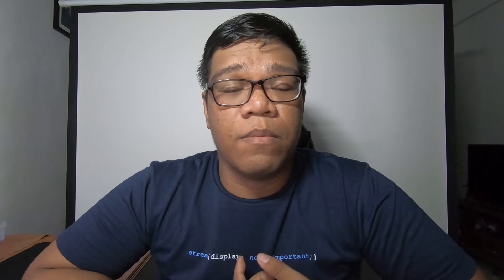Before we start, we need some materials to do our project. First, we need the Arduino Uno, jumper wires, breadboard, and of course the LED. The next thing we need to do is to create a circuit diagram to plot the wires and LEDs that we will use for the Arduino project.